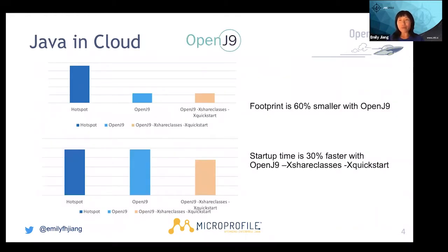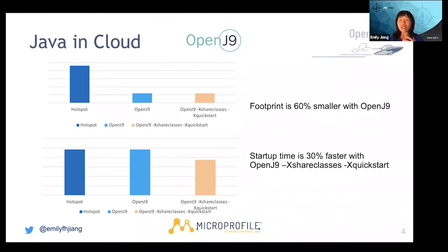We have done a benchmark comparing OpenJ9 and HotSpot. It turned out that for memory footprint and startup time, OpenJ9 is really, really good — saving around 40% on memory and also 30% faster with shared classes and the quick start configuration.